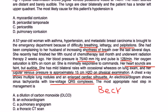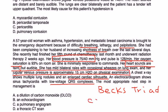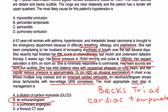Let's check for Beck's triad: low blood pressure — yes. Muffled heart sounds — yes, heart sounds are faint. Jugular venous distension — yes, jugular venous pressure is quite high. She has cardiac tamponade. They're asking for the next step, which is to do a bedside echocardiogram to confirm the diagnosis.